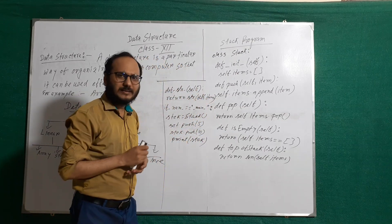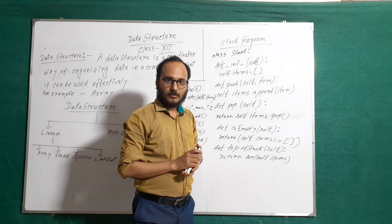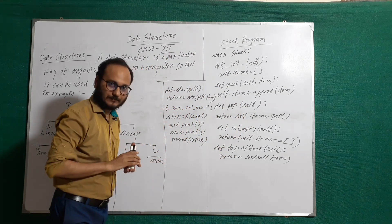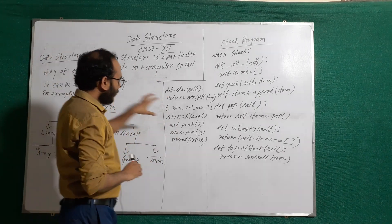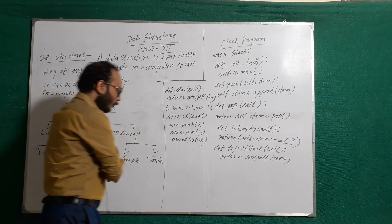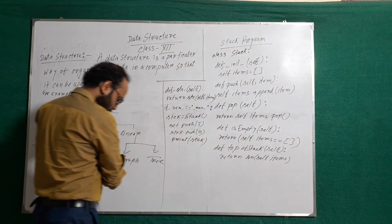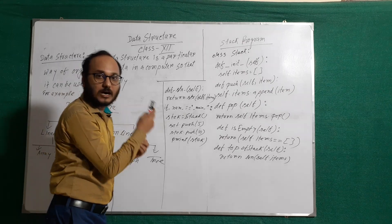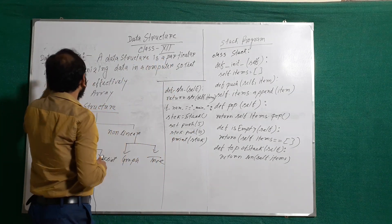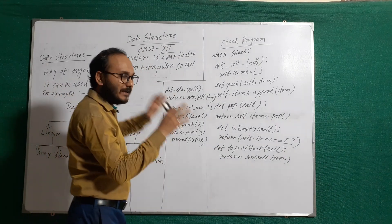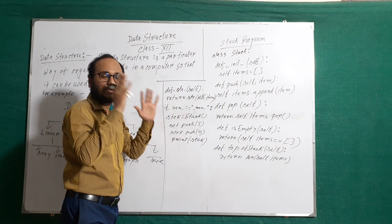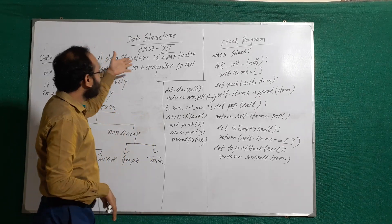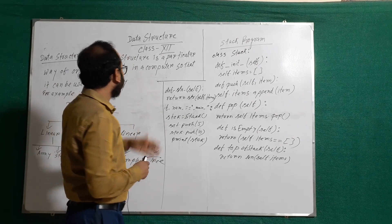For example, we store student details at particular indexes — the first student's data here, second here, third here, fourth here. We can arrange and link this student data into a data structure. How this is possible, we will discuss later.